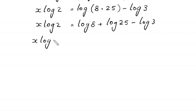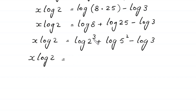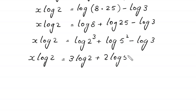Next, x times log of 2 is equal to: log of 8 can be written as log of 2 cubed, plus log of 25 can be written as log of 5 squared, minus log of 3. Then, log of 2 cubed becomes 3 times log of 2, and log of 5 squared becomes 2 times log of 5, minus log of 3.